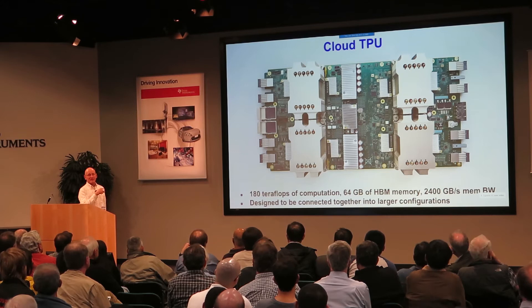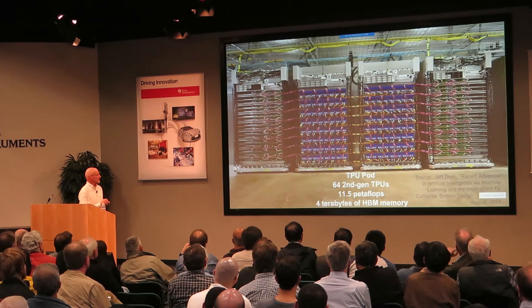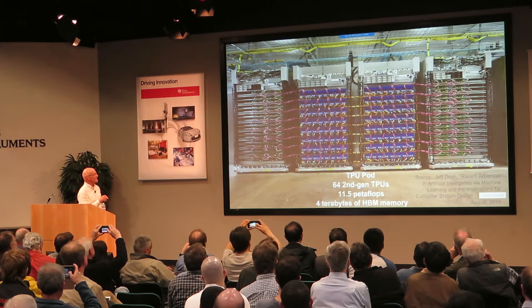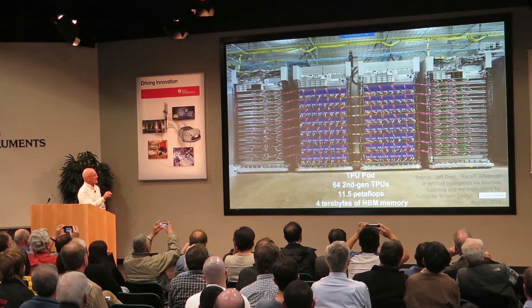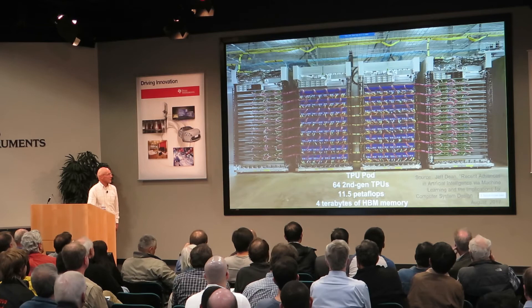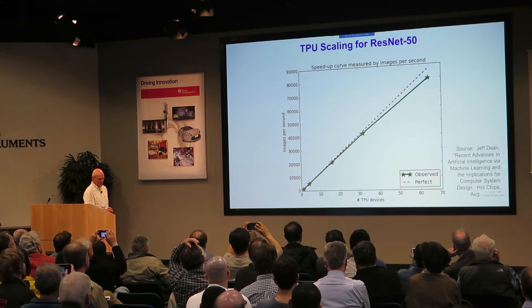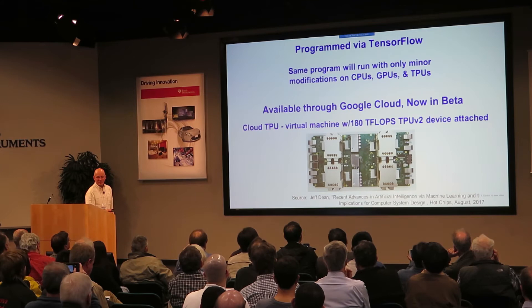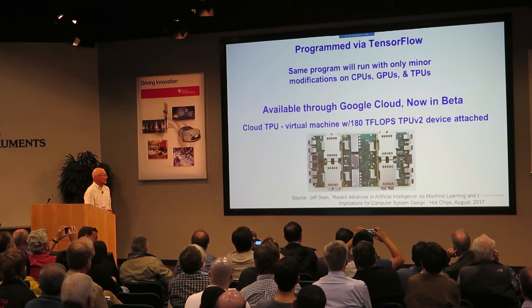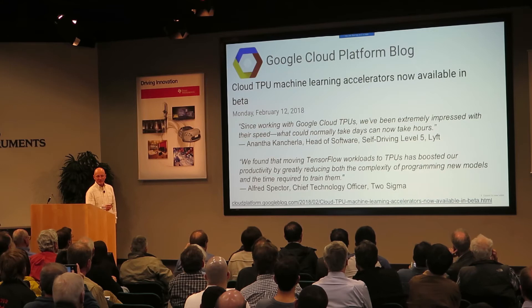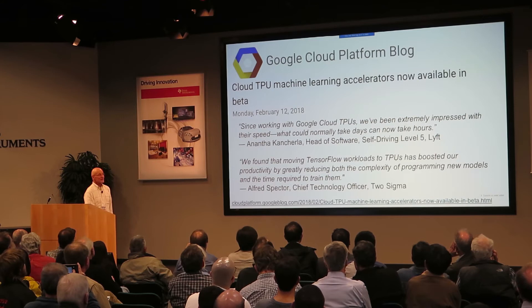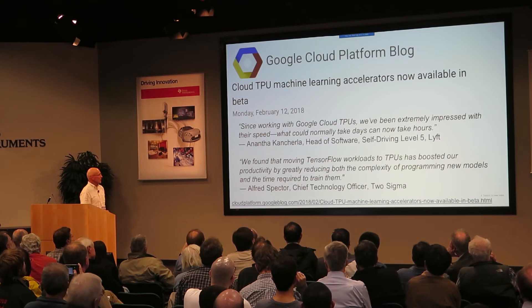Unlike the TPU v1, the v2 is designed to be connected together to build a much bigger computer — called the pod. It's 64 TPU cards connected by ribbon cables, collectively 11 petaflops for machine learning and four terabytes of HBM memory. It shows very close to linear scalability on the popular ResNet image benchmark, which is great. It's programmed in TensorFlow, Google's open-source domain-specific language for this domain-specific architecture. The second-generation TPU is going to be available in the cloud to rent — early customers quoted as very happy using the v2 TPUs.